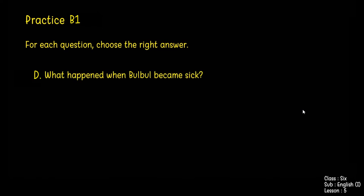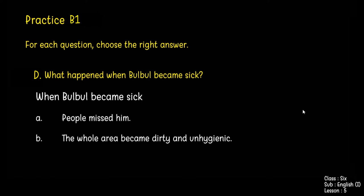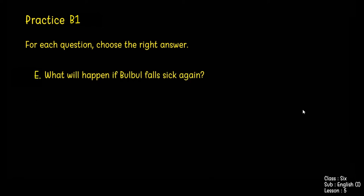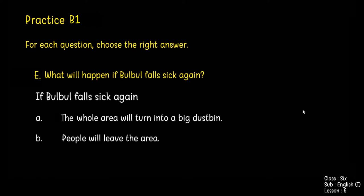Question 4: What happened when Bulbul became sick? Option A: people missed him. Option B: the whole area became dirty and unhygienic. The answer is option B — the whole area became dirty and unhygienic. Question 5: What will happen if Bulbul falls sick again? Option A: the whole area will turn into a big dustbin. Option B: people will leave the area. The answer is A — the whole area will turn into a big dustbin.